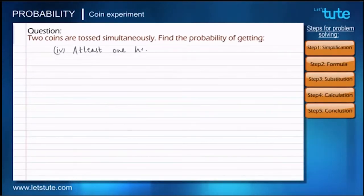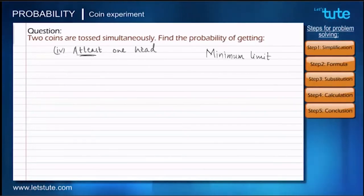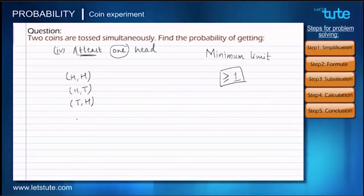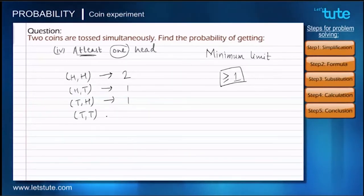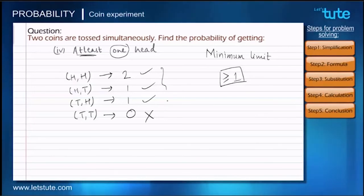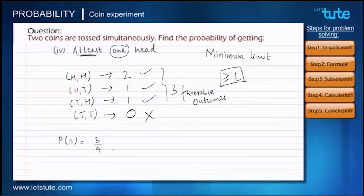Let's solve the fourth sub-question: find the probability of getting at least one head. When we say 'at least,' we are talking about a minimum limit, and the minimum here is one — we need one or more heads, but not fewer. Checking the outcomes: the first has two heads, the second and third each have one head, and the fourth has no heads. We need at least one head, so we include the first three outcomes, giving us three favorable outcomes. Substituting into the formula gives 3 upon 4.